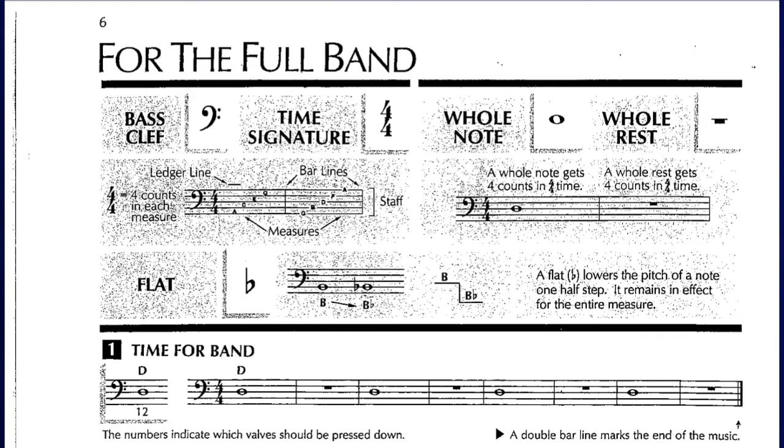The names of the spaces in bass clef are A, C, E, and G. A great way to remember that is all cows eat grass because it's true.